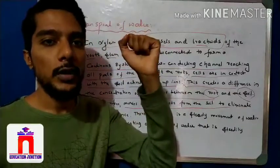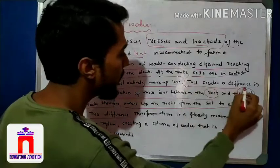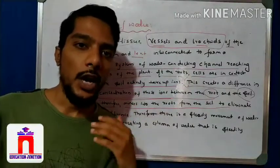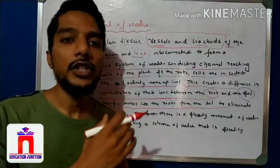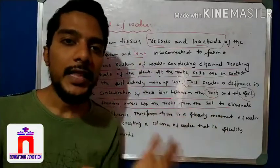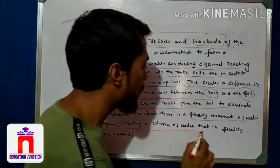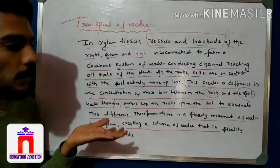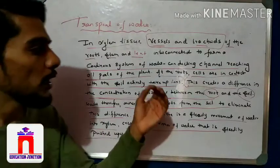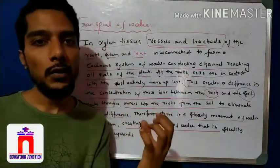To move water opposite to gravity, we require some upward force. The upward force is created by the concentration difference of ions between roots and soil. High concentration of water in the soil and less concentration in the root creates a difference, and automatically an upward force is created. That upward force involves the steady upward movement of water, creating a column of water. That is the first condition — concentration difference between root and soil creates upward force.